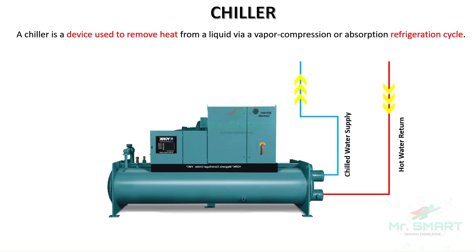So, what exactly is a chiller? A chiller is a machine that removes heat from a liquid via a vapor compression or absorption refrigeration cycle. This cooled liquid is then circulated through a heat exchanger to cool air or equipment as needed.